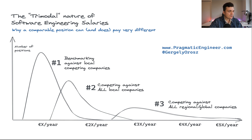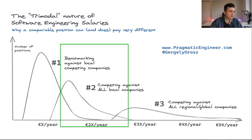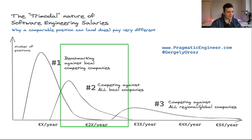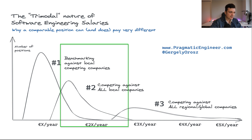The next one is tier two companies. These are usually cross-regional international companies that can hire talent from different countries and pay a pretty good, high average market salary. They compete for talent with tier one companies and other tier two companies. Some examples of these companies are Deutsche Bank, JetBrains, Revolut, TopTal, and many more.